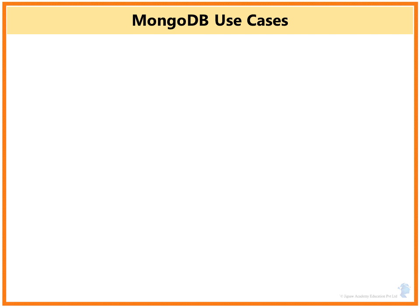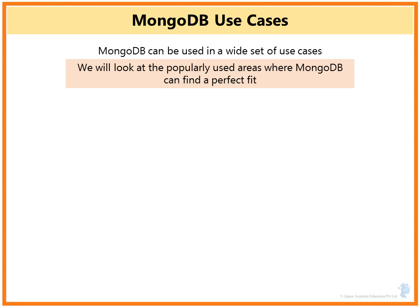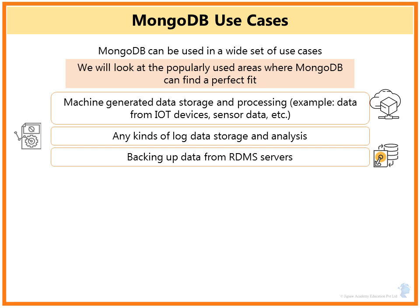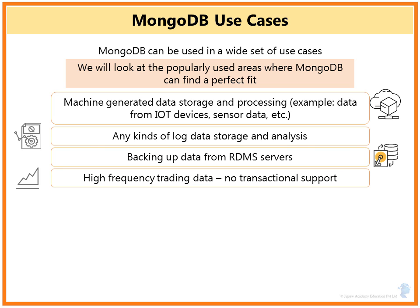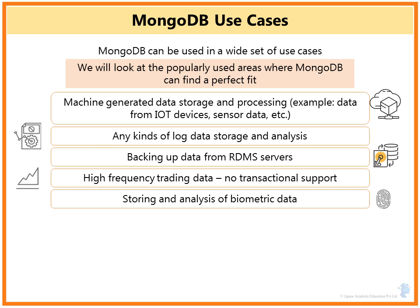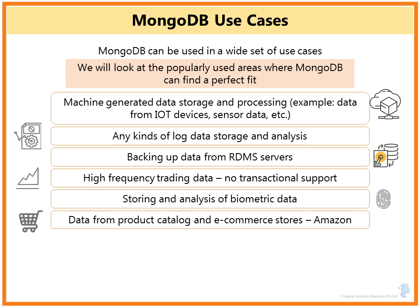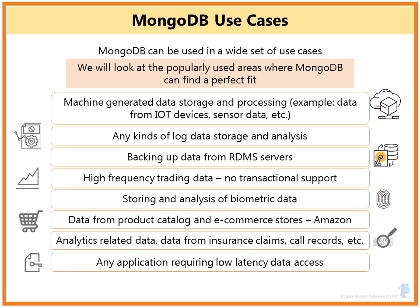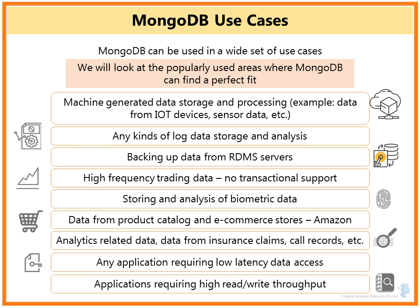MongoDB use cases: MongoDB can be used in a wide set of use cases. Popular areas where it finds a perfect fit include machine-generated data storage, log storage and analysis, backing up data from RDBMS servers, high-frequency trading data in the financial world (without transaction support), biometric data storage and analysis, product catalog and e-commerce data like Amazon, analytics data, insurance claims, call records, applications needing low-latency data access, and applications requiring high read/write throughput under heavy workloads.